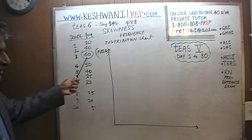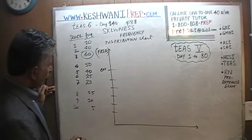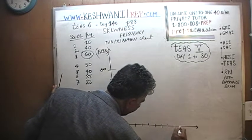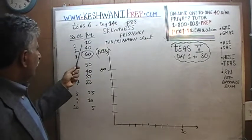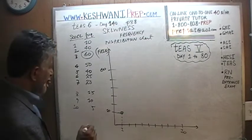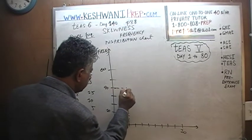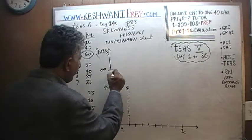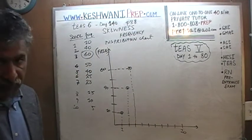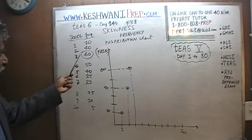The frequency goes on the y-axis. The highest frequency we see here is 60, so 60 is going to be the top. The axis goes 10, 20, 30, 40, 50, 60, and the score takes values 1 through 10. The score of 1 was gotten by 10 people. The score of 2 was gotten by 40 people. 60 people managed to get a score of 3 — that's the highest frequency. That's your mode — the observation that appears most often. If somebody asks you what's the mode of this distribution, we don't need to plot everything to know the mode is 3.